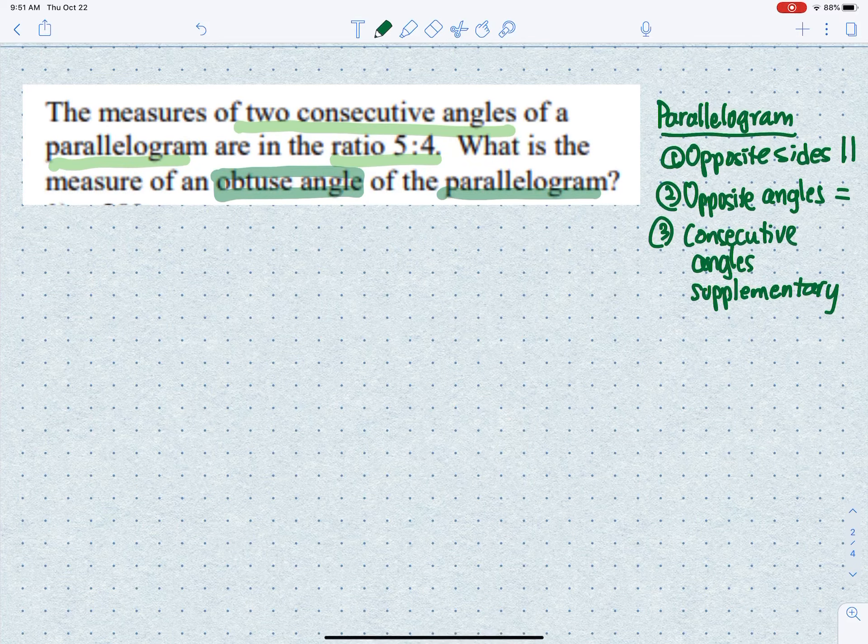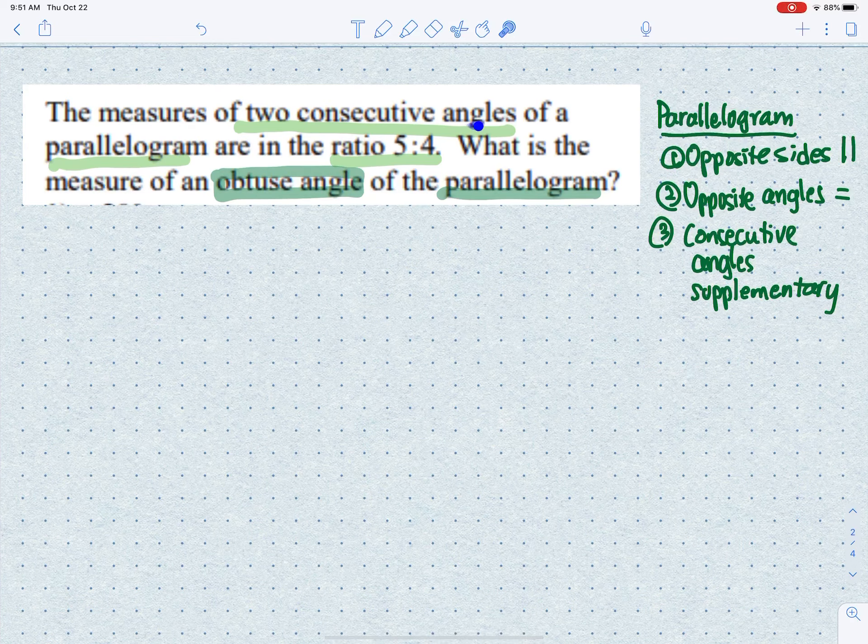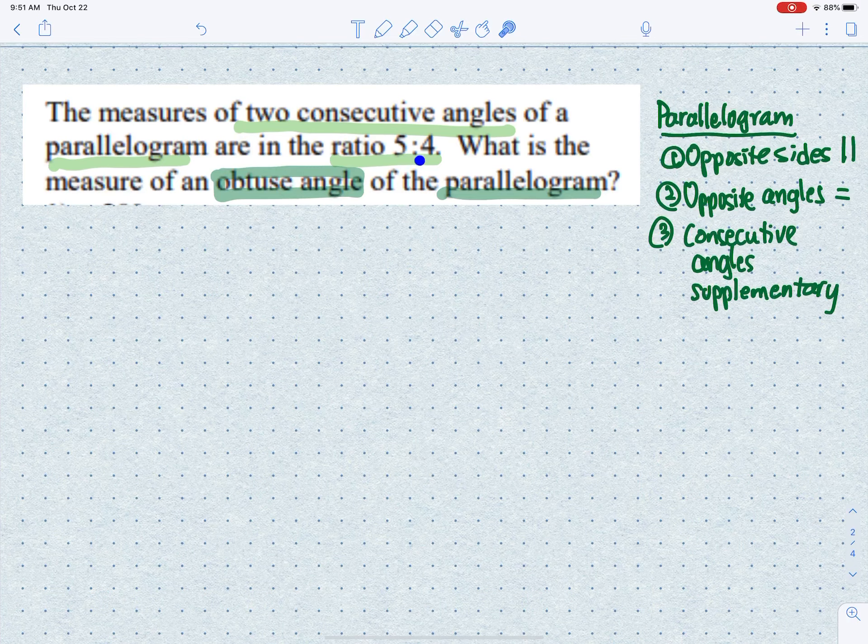Hello scholars, welcome back to the Chong channel. The measures of two consecutive angles of a parallelogram are in the ratio of 5 to 4. What is the measure of an obtuse angle of the parallelogram?